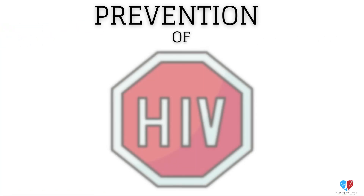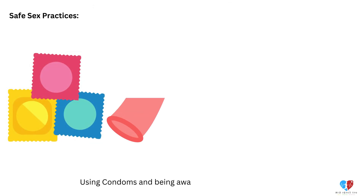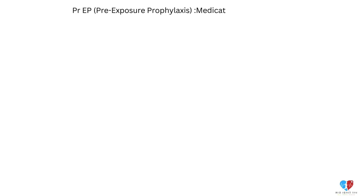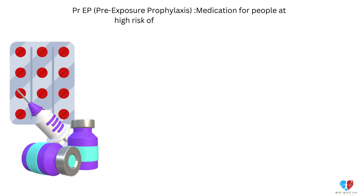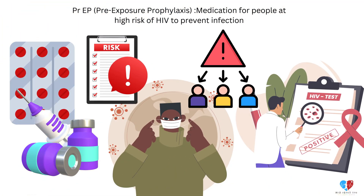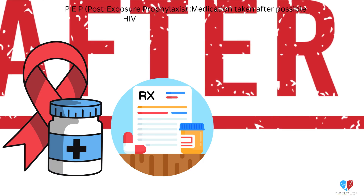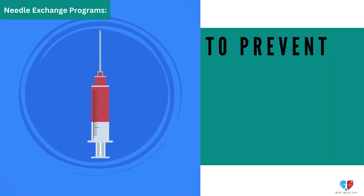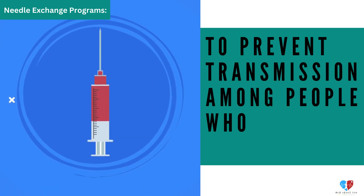Prevention of HIV. Safe sex practices — using condoms and being aware of partners' HIV status. PrEP, pre-exposure prophylaxis — medication for people at high risk of HIV to prevent infection. PEP, post-exposure prophylaxis — medication taken after possible HIV exposure to prevent infection. Needle exchange programs to prevent transmission among people who inject drugs.